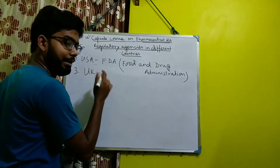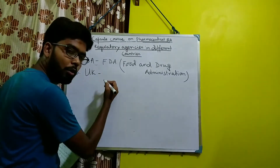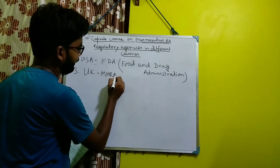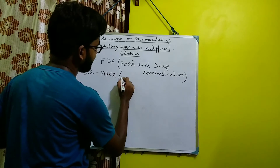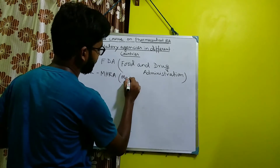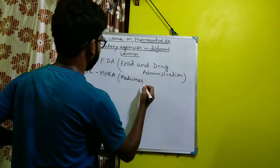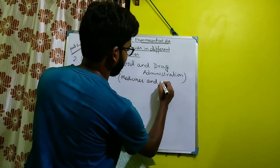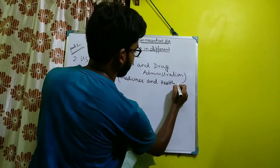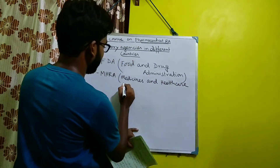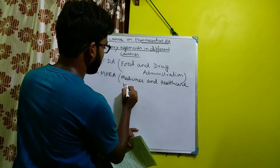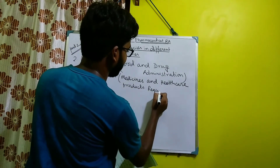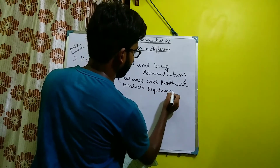Coming to UK. The name of the regulatory agency of UK is MHRA. The full form of MHRA is Medicines and Healthcare Products Regulatory Agency.